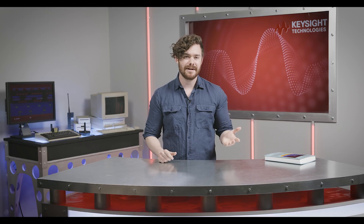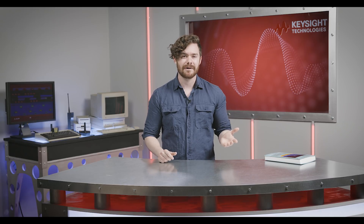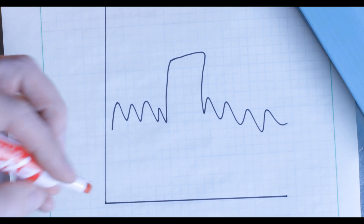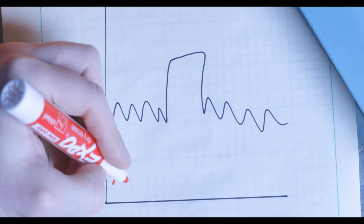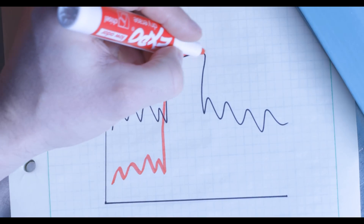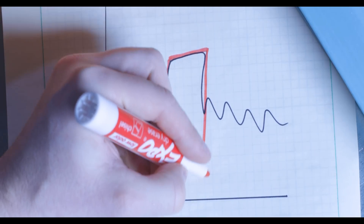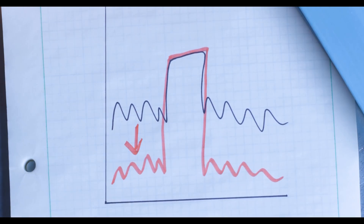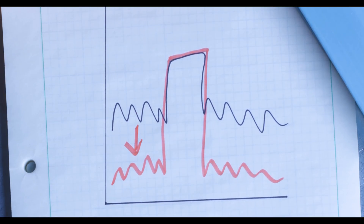If you can't increase the signal power, the next best thing to do is to reduce the IF bandwidth. This will make your network analyzer process smaller chunks of the measurement, so you'll get a more accurate result, but the measurement will take longer.